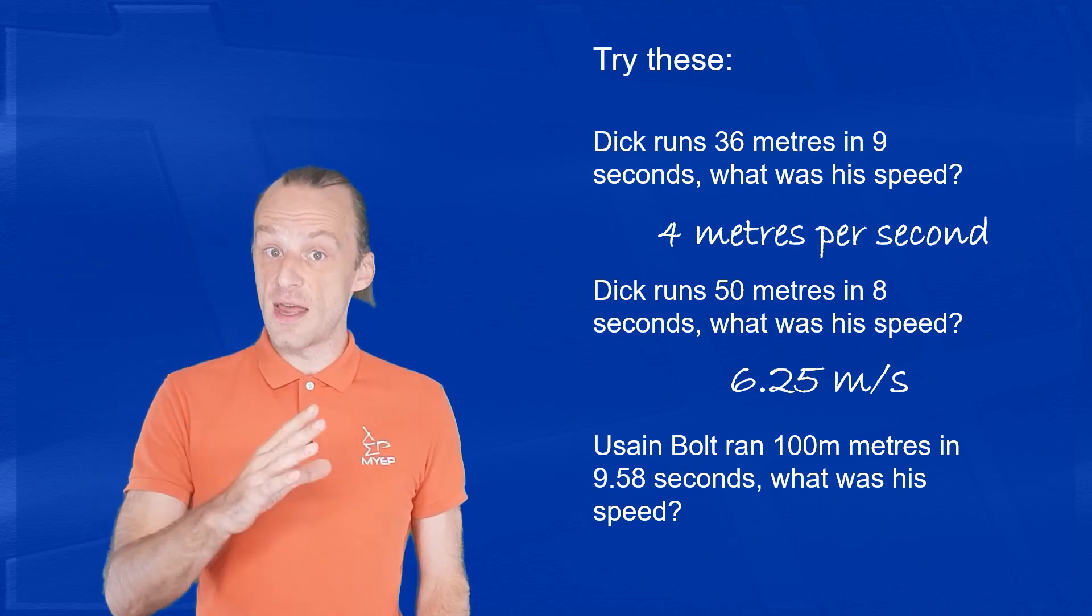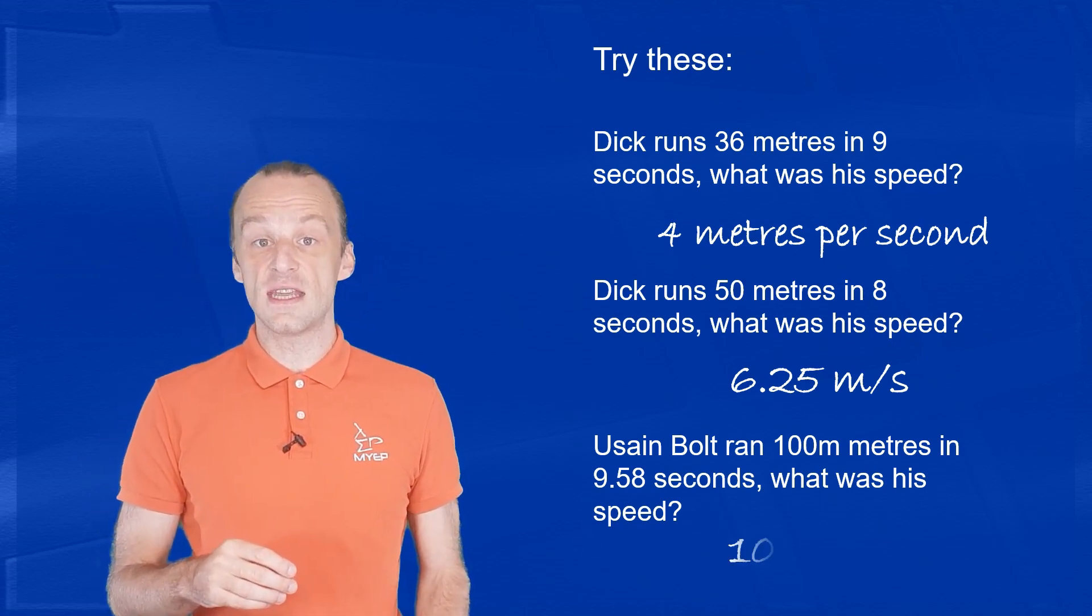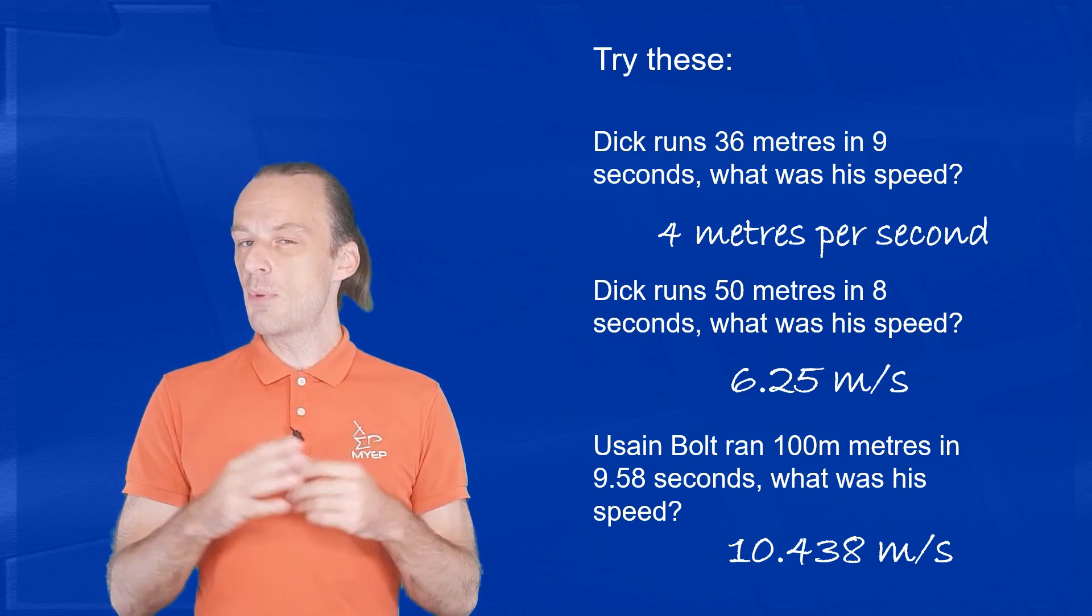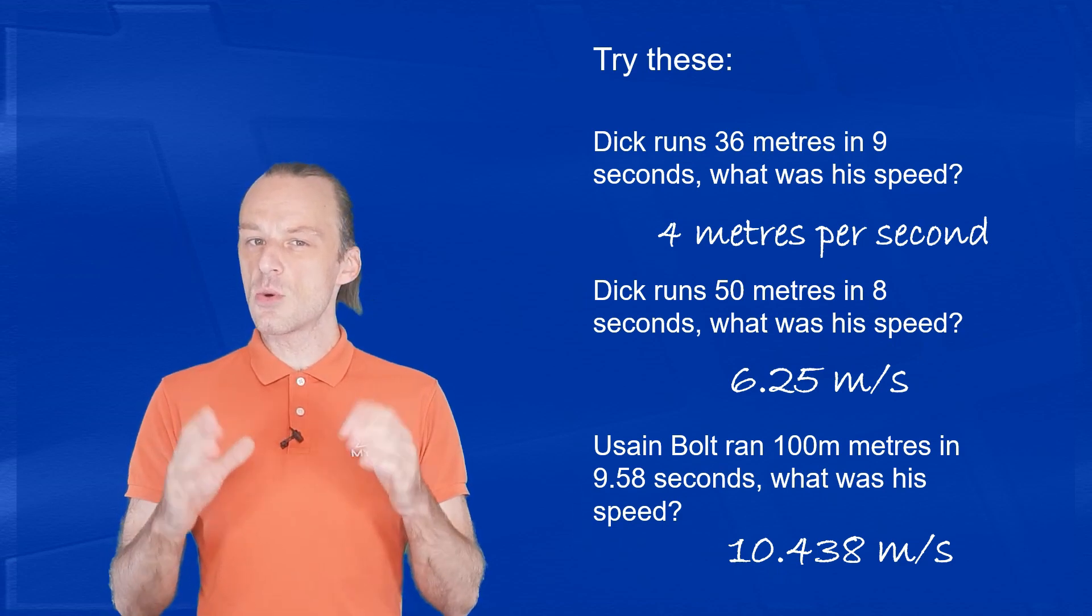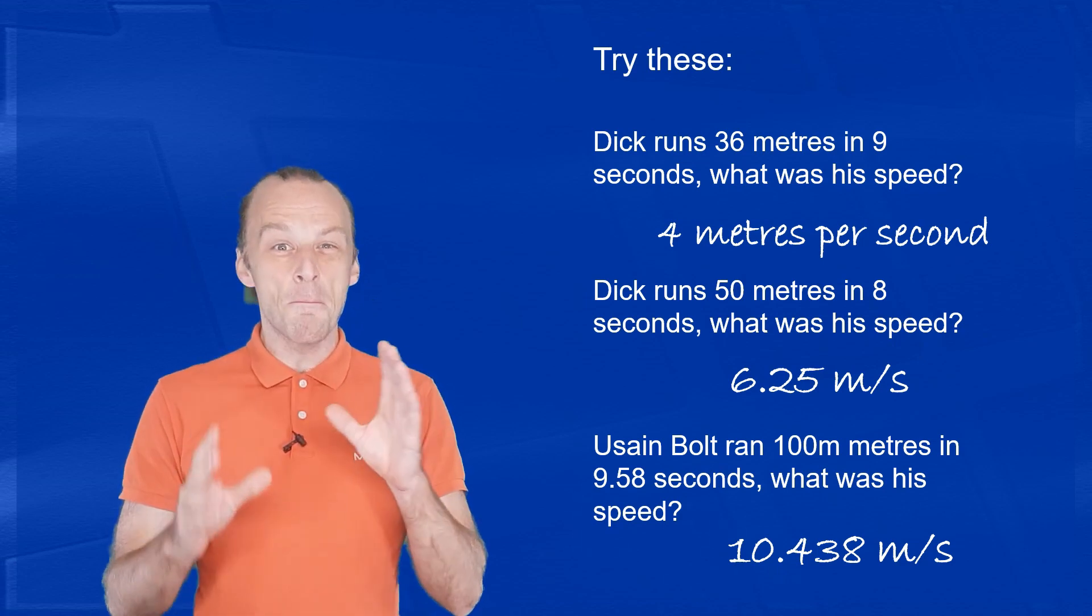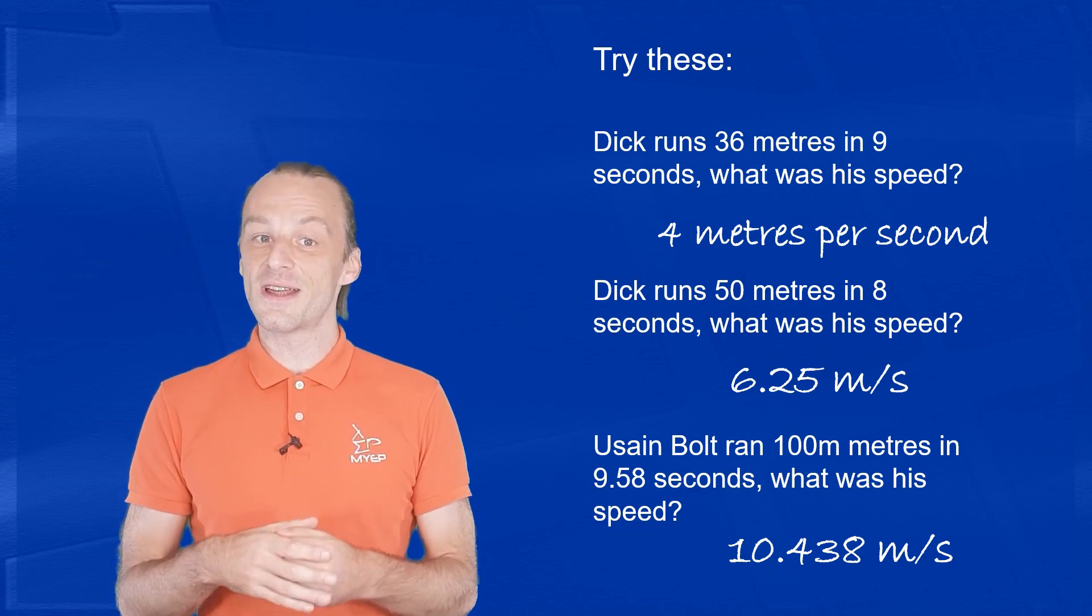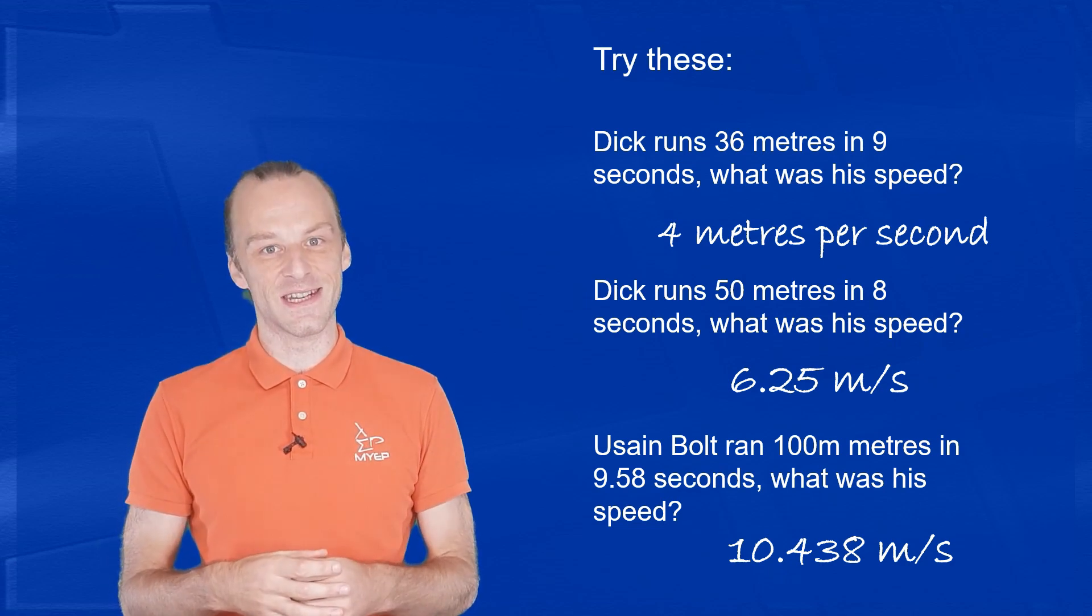What was his speed? 100 divided by 9.58 gives us 10.438 meters per second. It's important to remember that most questions in the real world give us messy decimal answers like this. Whole number answers are mostly just for practicing in school.